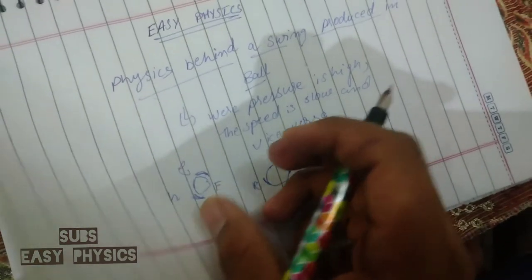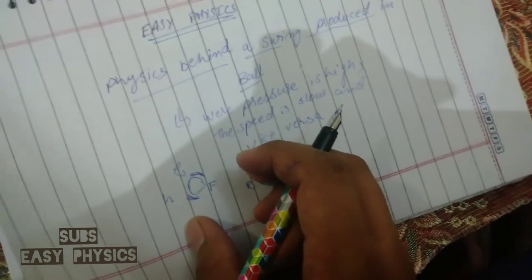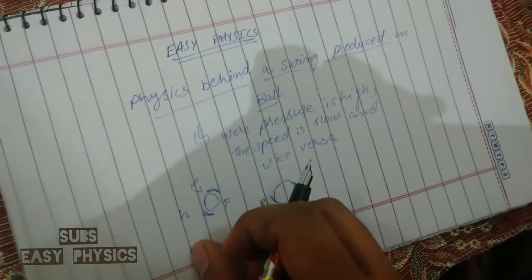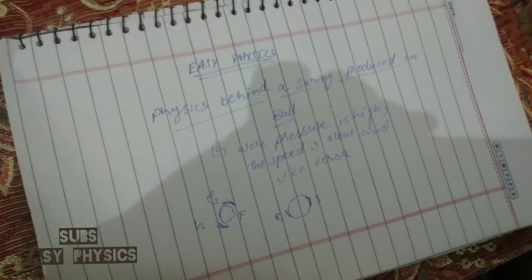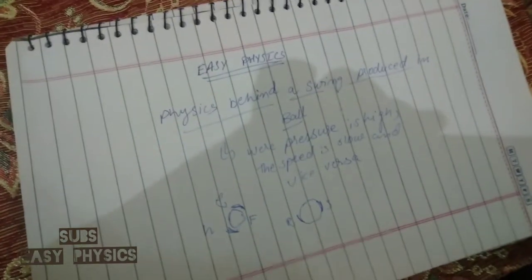A swing is produced in the ball, which is used to defeat the opponent player. I hope that you liked the video. If you liked the video, stay connected and like our channel. Subscribe for more interesting videos and physics basics. Thank you.